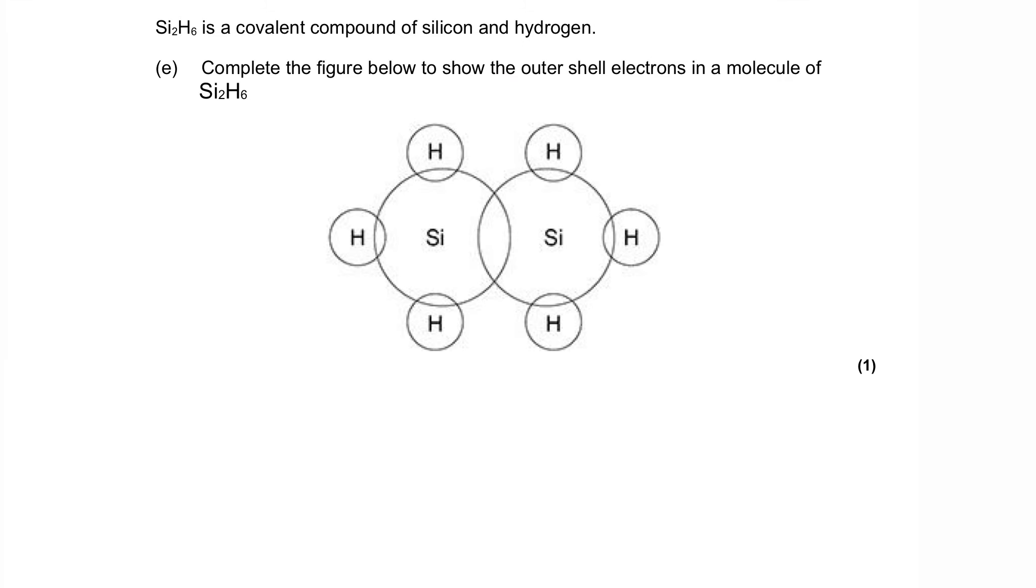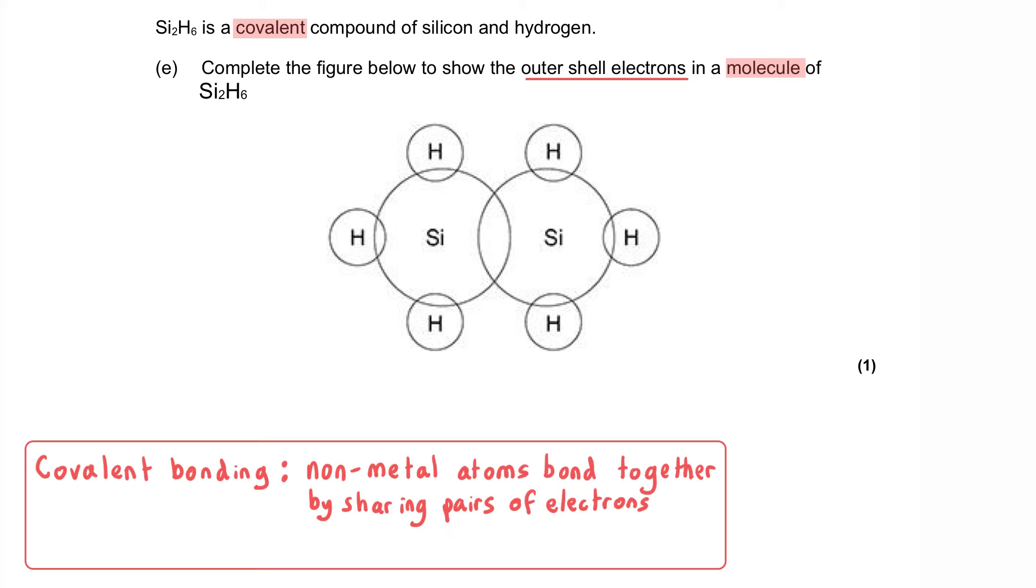Si2H6 is a covalent compound of silicon and hydrogen. Complete the figure below to show the outer shell electrons in a molecule of Si2H6. And you can see that we've got some element symbols in this space here. And the electron shells are currently shown as empty circles.